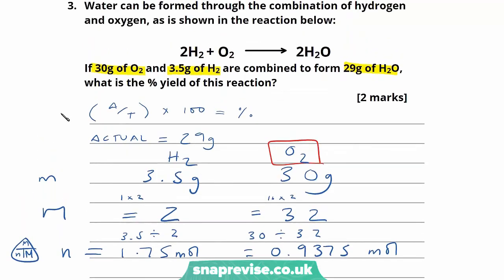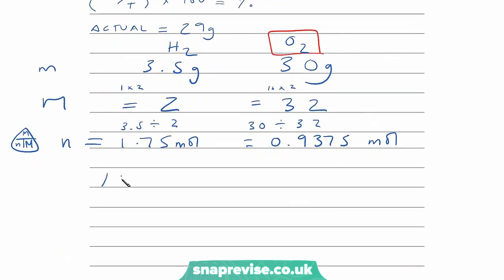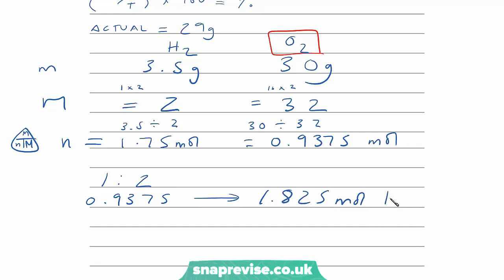Looking at the reaction equation, 1 mole of oxygen goes to form 2 moles of water — that's a 1 to 2 ratio. So if we have 0.9375 moles of oxygen, that would form twice as many moles of water: 1.875 moles of H₂O are formed.